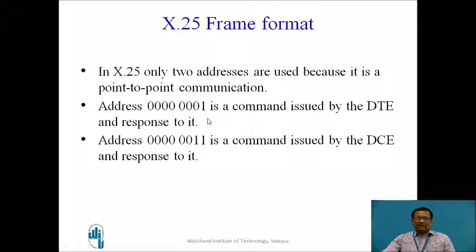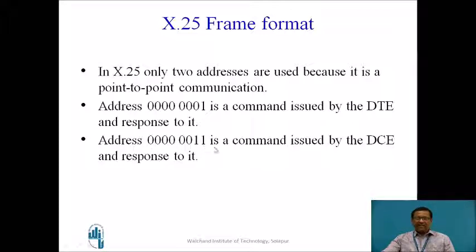Address of the source and address of the destination. For example, the 8-bit address 01 is a command issued by the DTE and response to it. Since it is a point-to-point communication, the communication is established between 2 DTEs. In X.25, DTE wants to communicate with another DTE with the help of the X.25 network which consists of DCEs. The DCE address 03 is a command issued by the DCE and response to it, and the data is transferred.